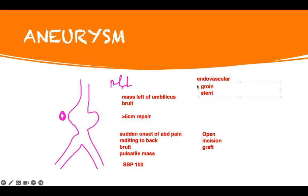Post-op care for both types of aneurysm repair is the same - check for bleeding first. They won't tell you the patient is bleeding directly; they'll give you signs: high heart rate, low blood pressure, low urine output, change in mental status, or new onset back pain. All these are evidence of bleeding. You must monitor carefully.